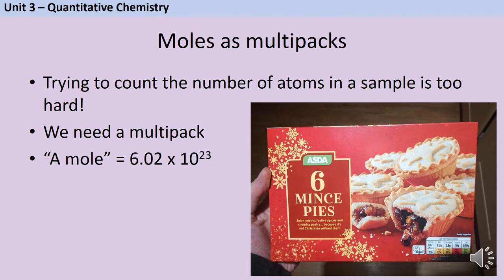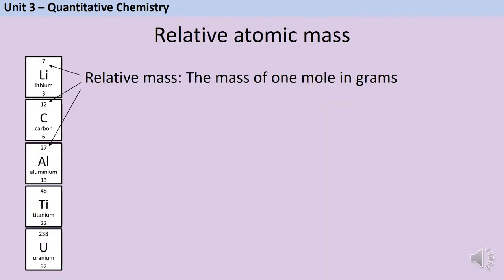It doesn't matter whether the particles in question are atoms or ions or molecules or electrons—if there are one mole of them there are always 6.02 times 10 to the 23. If you look at an element on the periodic table, the larger of the two numbers is the element's relative atomic mass. This is the mass of one mole of that substance on a scale where the mass of carbon-12 is exactly 12 grams.